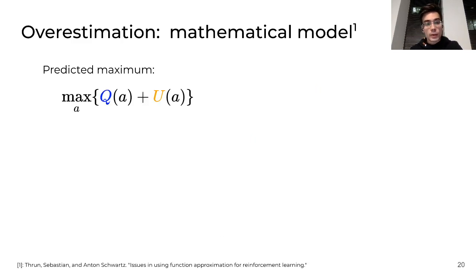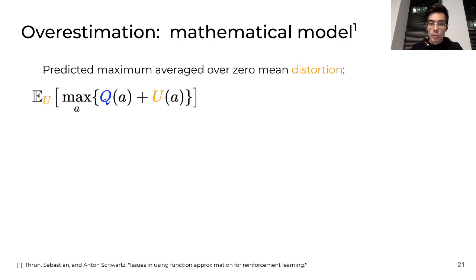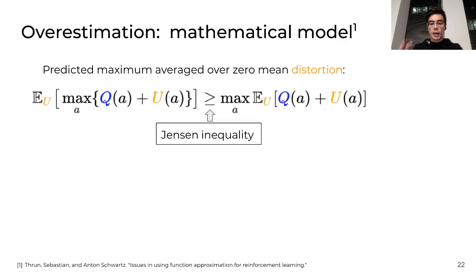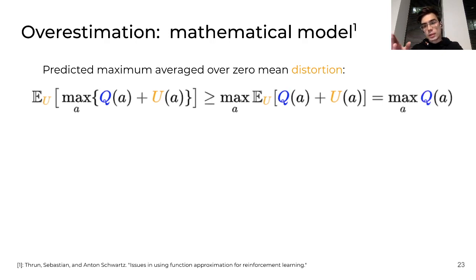Essentially, what we have is the maximum over the approximation. Let's average it over this zero mean distortion. Using the concavity of the maximum operator, we can apply the Jensen inequality and the averaged distortion vanishes. And we end up with the maximum over the true value function. And now it is clear that the predicted maximum is always greater than the true value.